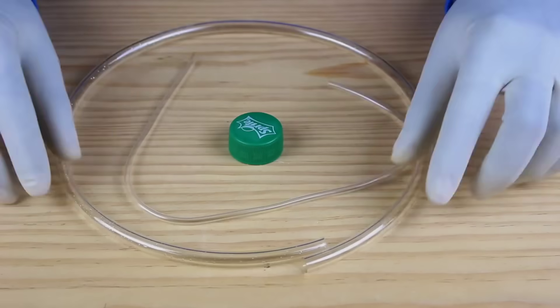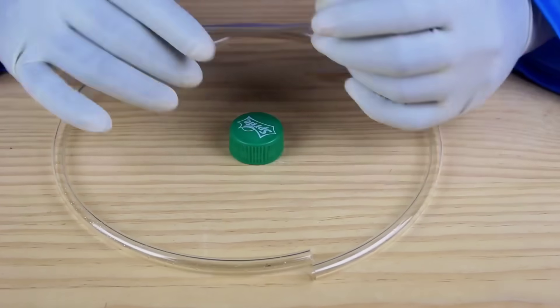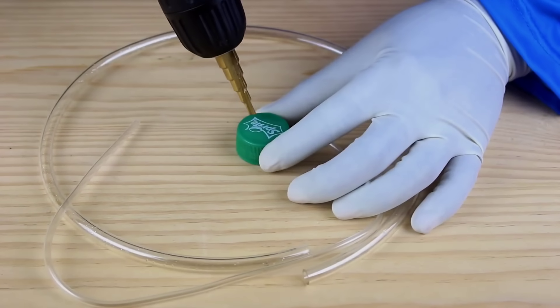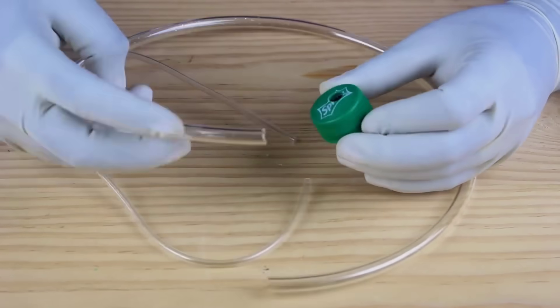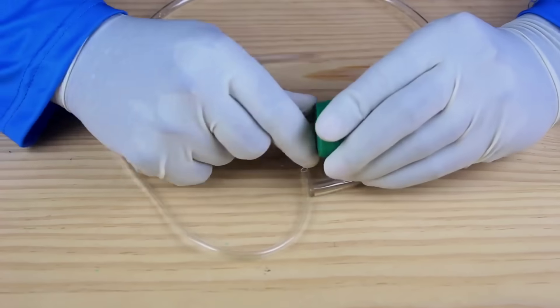For this, I used RO purifier pipes because they are lightweight, flexible, and perfect for carrying liquids without any leakage. Using a drill machine, I carefully created two holes in the bottle cap, sized just right to fit the pipe securely.